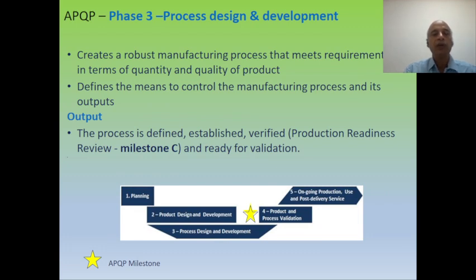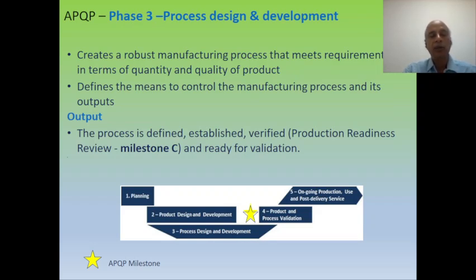Phase three is Manufacturing Process Design and Development. In this phase, we create a robust manufacturing process that meets requirements in terms of both quality and quantity of the product to be manufactured. It defines the means to control the manufacturing process and its output. Outputs include a defined process and manufacturing sequence to produce a quality-confirmed product. The milestone here is establishing and verifying the Production Readiness Review, confirming we are ready for validation.